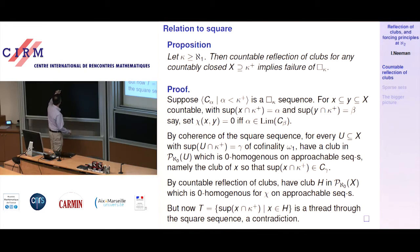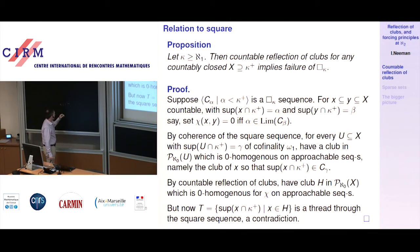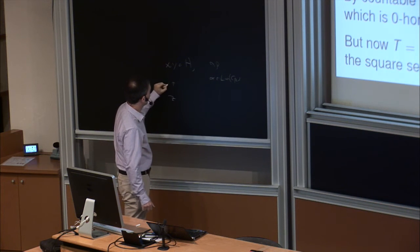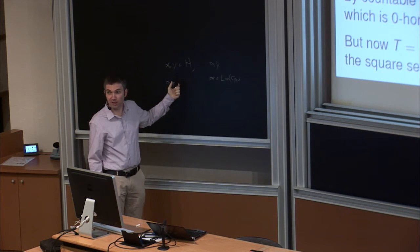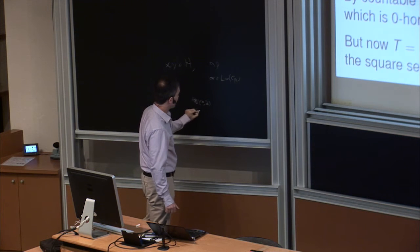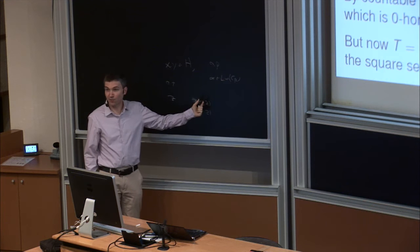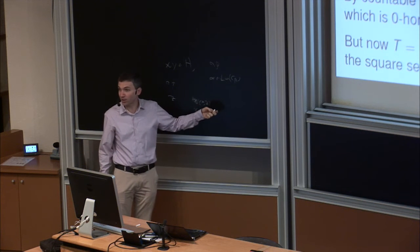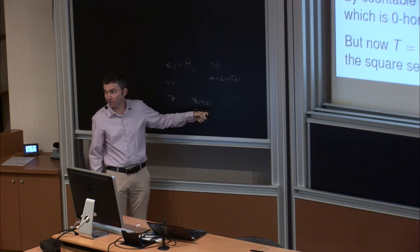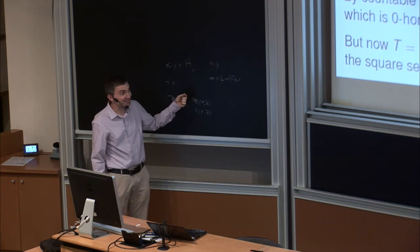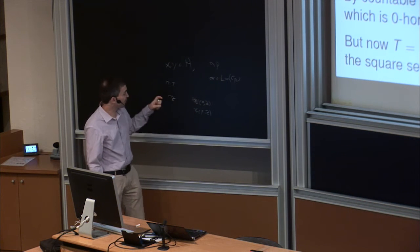If you take any X, Y in H with sups alpha and beta, you want to show that alpha is a limit point of C_beta. Take some Z which contains both of them as elements. You can use the coloring on the pairs (X,Z) and (Y,Z) because these are approachable sequences — Z contains X and Y. You get that chi takes value 0 in both cases, so each is a limit point of the square sequence corresponding to the sup of Z. By coherence, the smaller one is in the square sequence of the larger one. This is where I use countable closure.